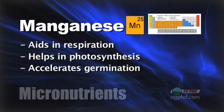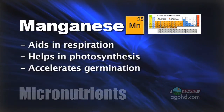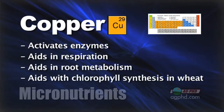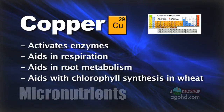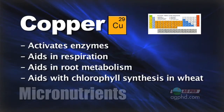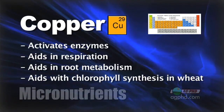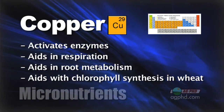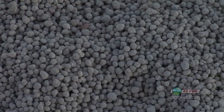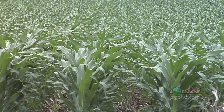Let's talk about manganese. Manganese is a big one too — it aids in respiration, it helps in photosynthesis, and it accelerates the germination of seed. There are so many things with manganese. With copper, there are so many things it does as well. It activates enzymes and aids in respiration, but it also has a lot of function in root metabolism, so it's a big, important nutrient. In wheat, a lot of times we notice that it aids in chlorophyll synthesis. So if you're having some issues in wheat, copper is often one that really helps the plants look better. With all these different micronutrients — and there are several others your crop really needs — it's not that they're not important to the plant, it's just that they're needed in small quantities.